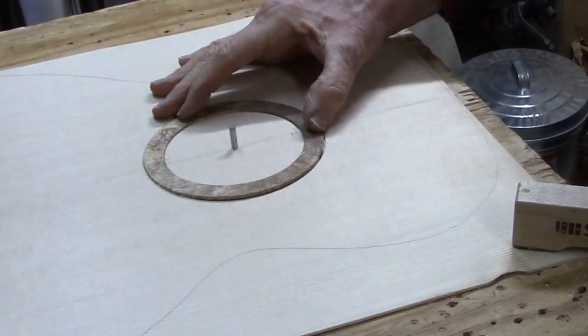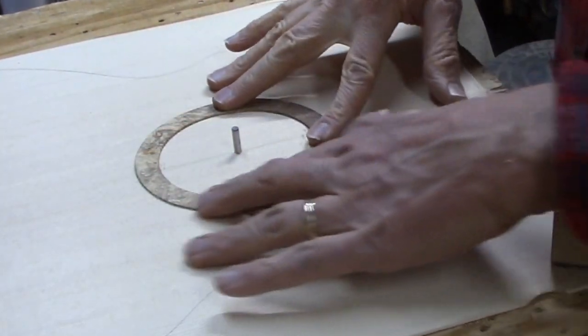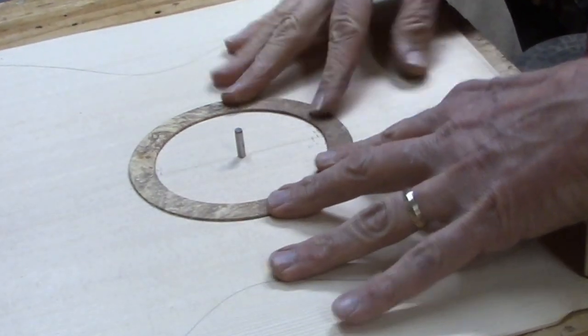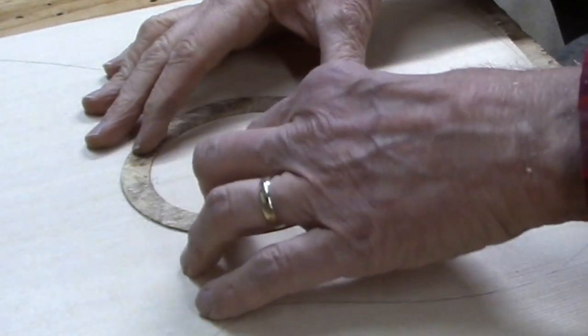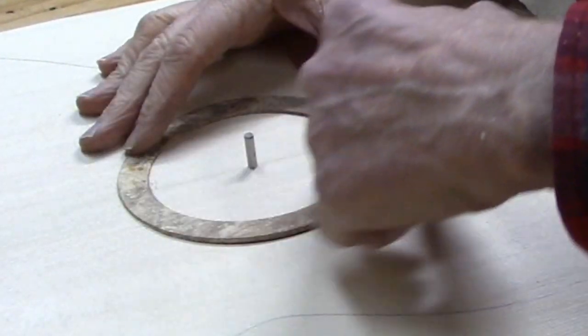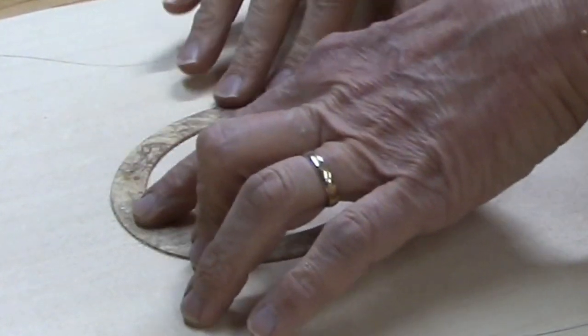Okay, so now I will glue this in, and after it dries, I'll scrape it flush with the top of the guitar, what will be the top of the guitar, and then I'll use that same router setup to make smaller channels for the contrasting purfling lines.